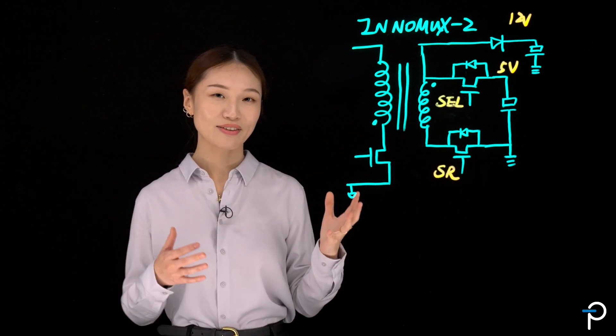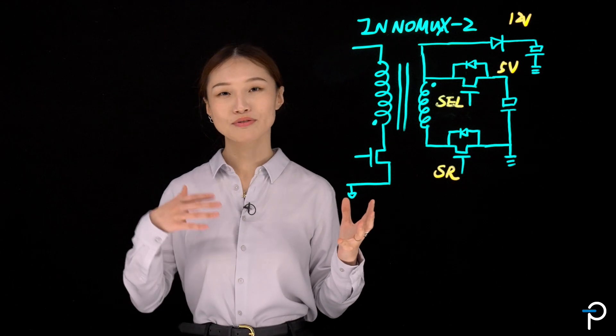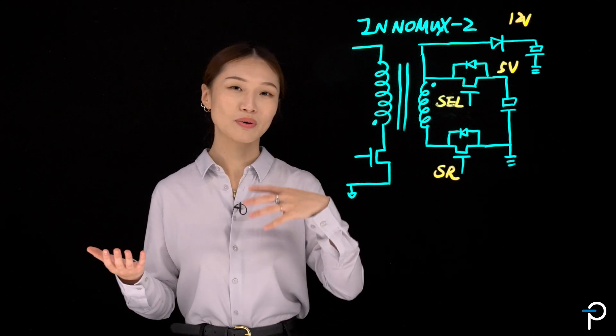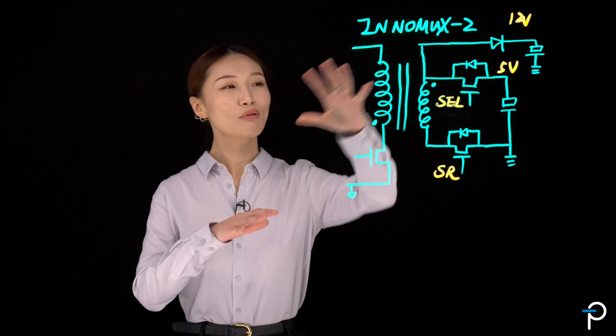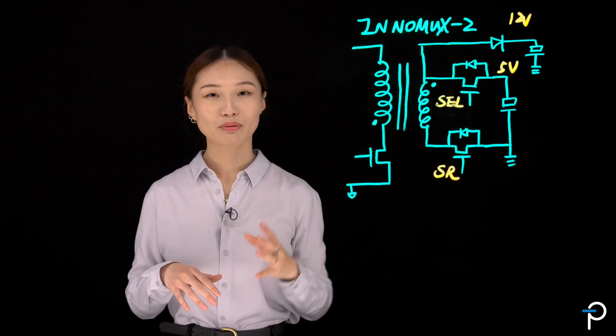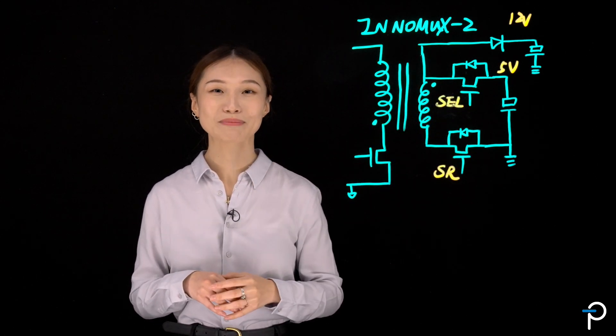So we call this the SRZVS, where we optimize for system efficiency and also allow for higher switching frequency at the same time. The overall system efficiency can be improved by as much as 1%, depending on your application.